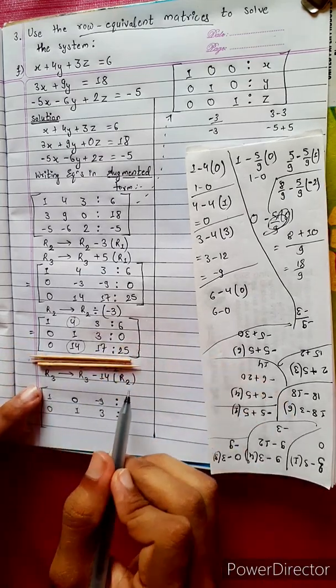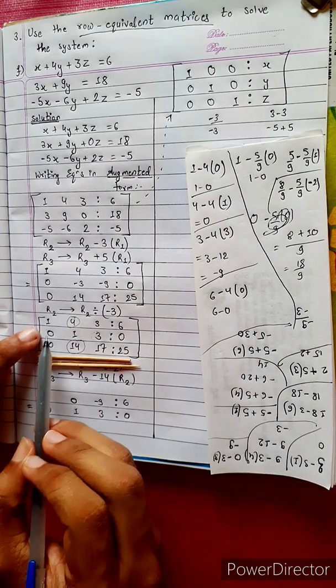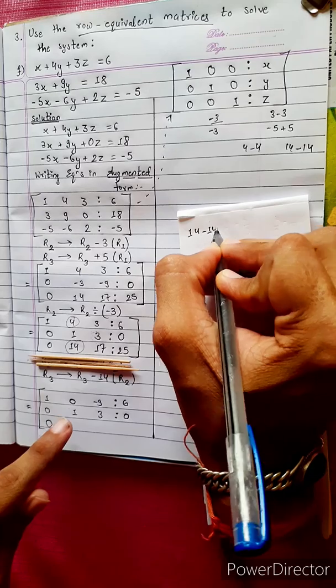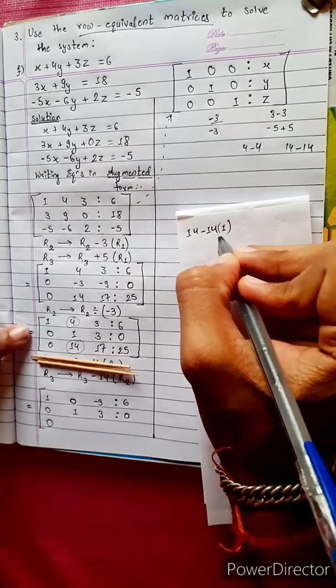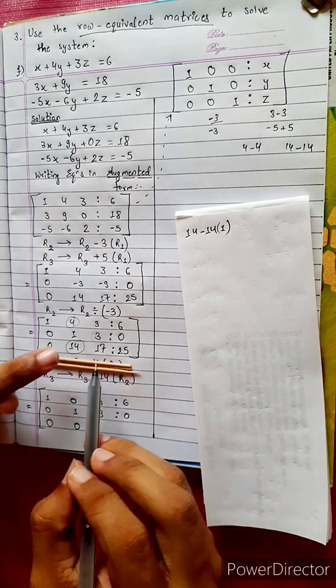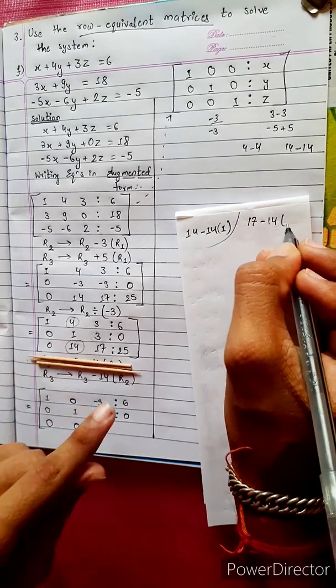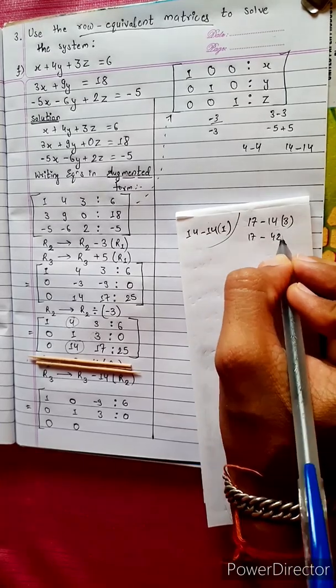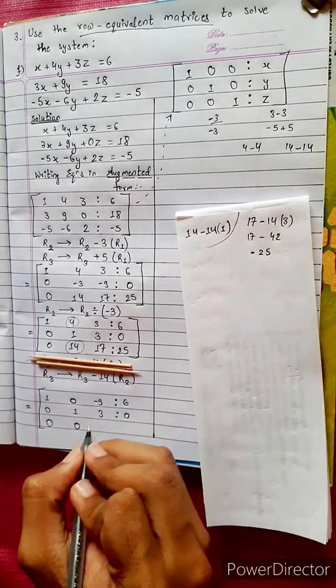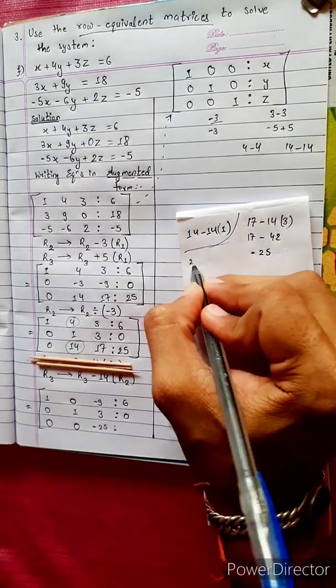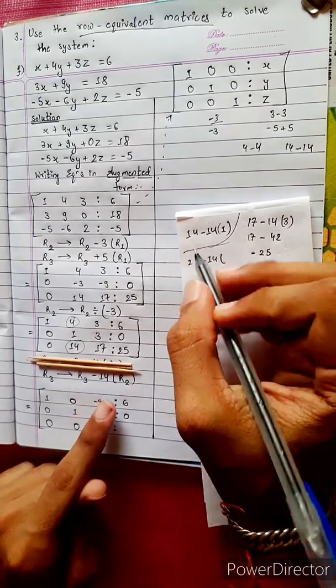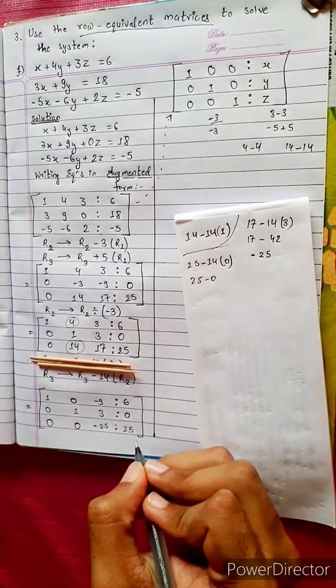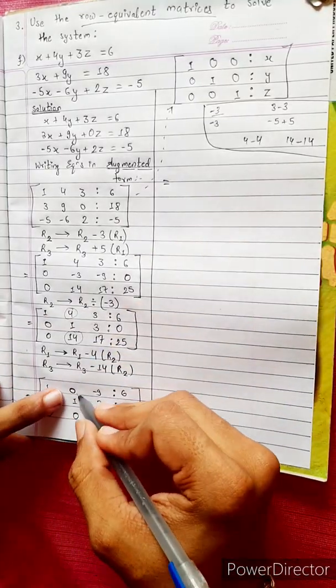R3 minus 14 times R2: 0 minus 14 times 0 equals 0, 14 minus 14 times 1 equals 0, 17 minus 14 times 3 equals minus 25, is to 25 minus 14 times 0 equals 25. Now we have 1, 0, minus 9 is to 6; 0, 1, 3 is to 0; 0, 0, minus 25 is to 25.